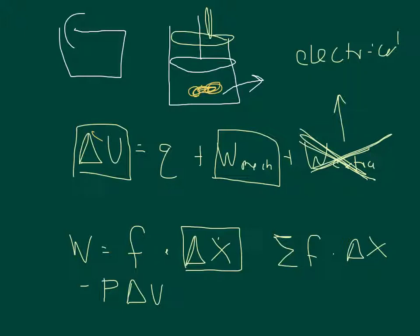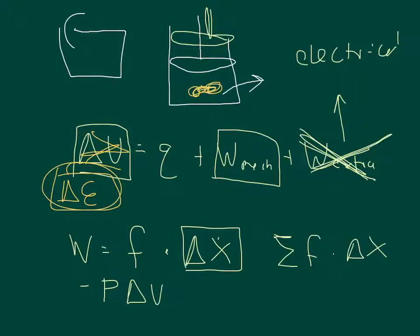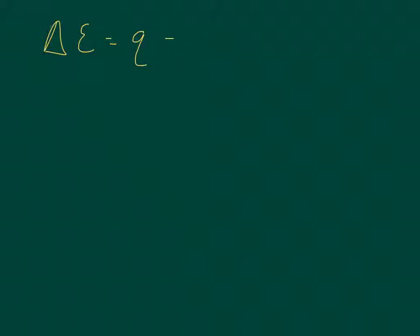In summary, the first law of thermodynamics requires that no energy can be created or destroyed. If the internal energy of something changes, that energy must have gone somewhere or come from somewhere — either heat added or taken away, or work done on or by the system. So the change of internal energy is equal to the heat transferred plus the work done on the environment: ΔE = Q - PΔV.